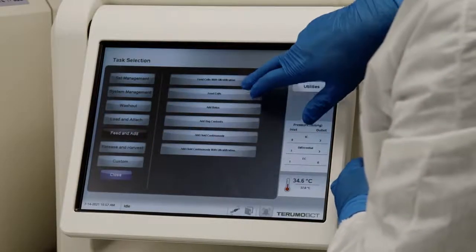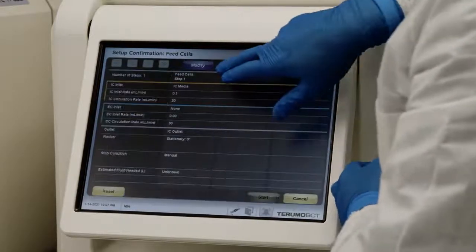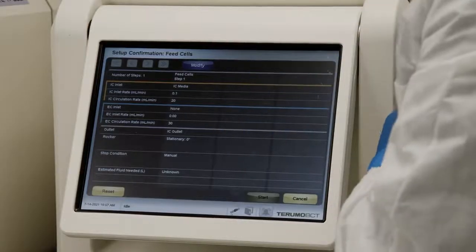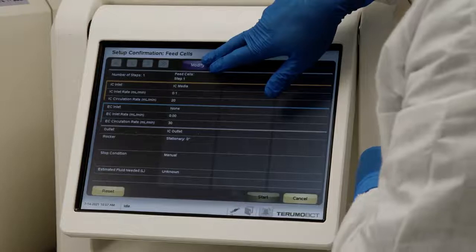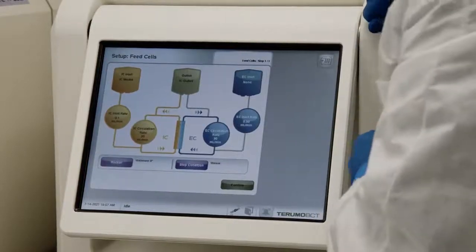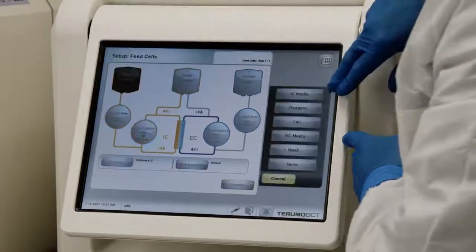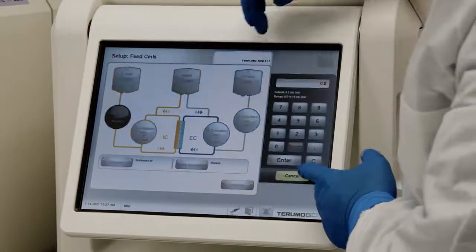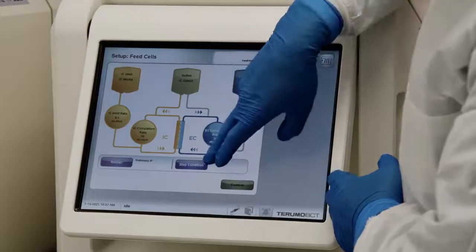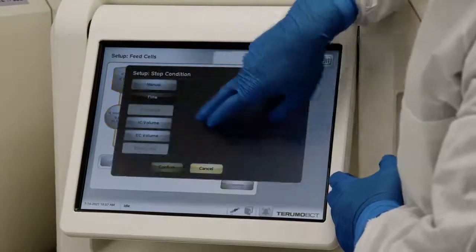For instance, we'll look at a feed cells task. You can set it and run it with the default settings or you can change the settings simply by clicking this modify button. Here you can change the reagents, flow rates, and stop condition. For instance, time.